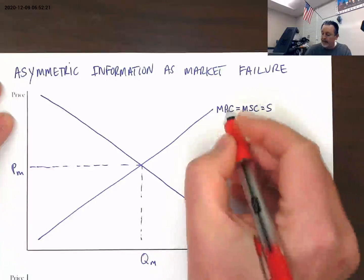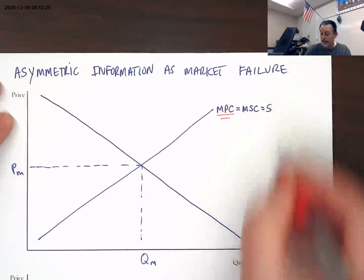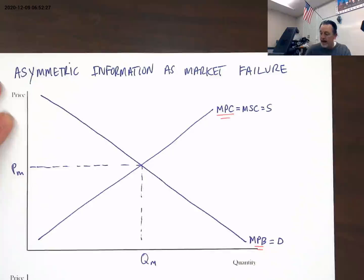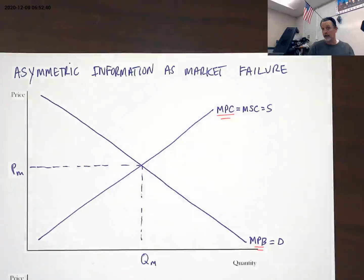We have the marginal private cost of production here, the supply curve, and we have the marginal private benefit from consuming additional units of this good, or the demand curve. This creates a market equilibrium that satisfies the private interests of both the buyer and the seller, the demander and the supplier, in this particular marketplace.